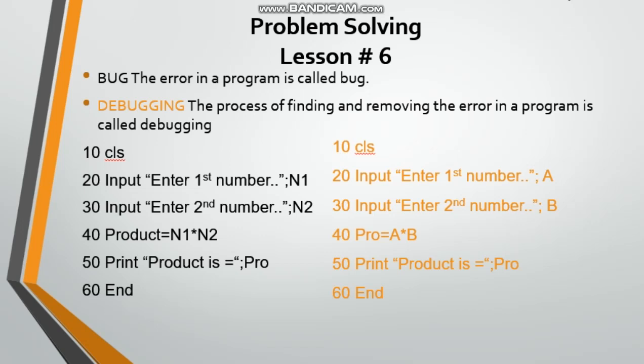This variable Pro will tell you that line number 40 and line number 50 both have Pro and both are the same. But in the previous program, there was Product in line 40 but line number 50 had Pro, so this error will not print. So we have processed two numbers together.